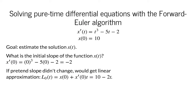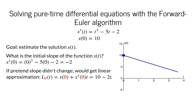We denote this linear approximation as L0 of t, where the 0 indicates we are matching the function and its derivative at t equals 0. We obtain the equation for a line with a slope of negative 2 and y-intercept of 10. The graph of the linear approximation looks like this. The slope looks shallower than negative 2 because the vertical scale is much larger than the horizontal scale, but indeed it drops by 8 units by the time we get to t equals 4.